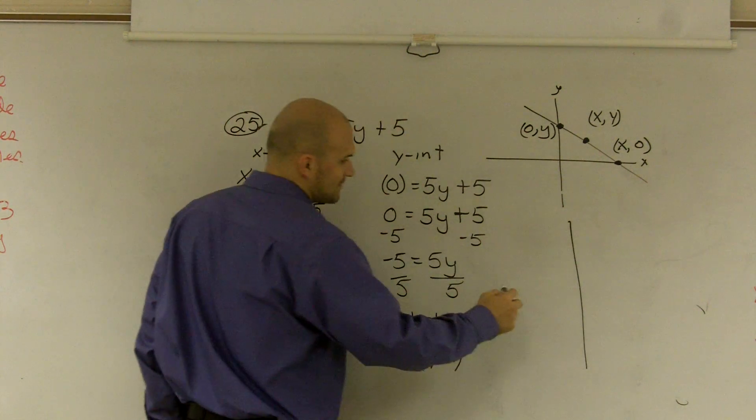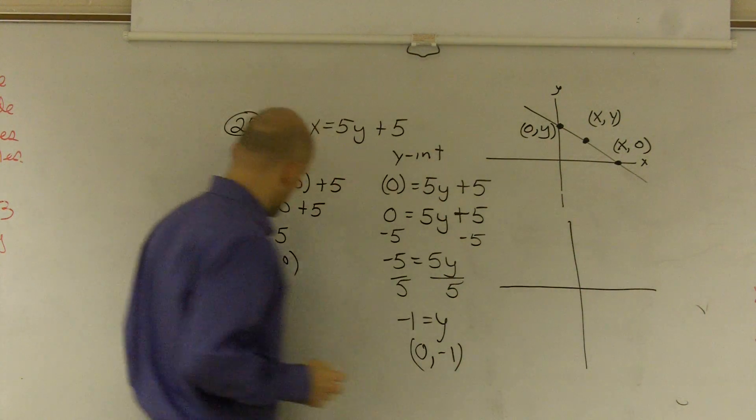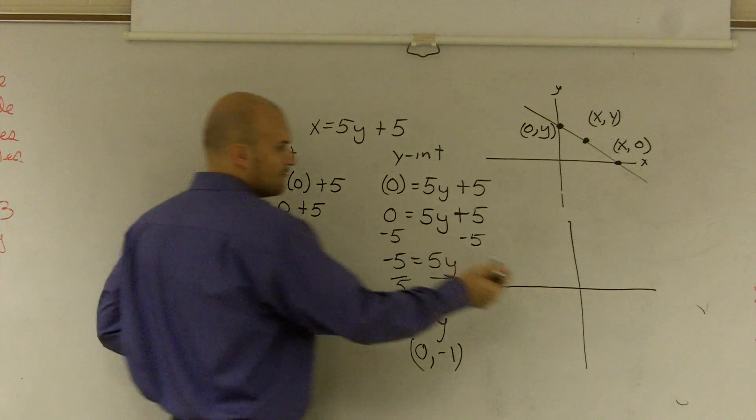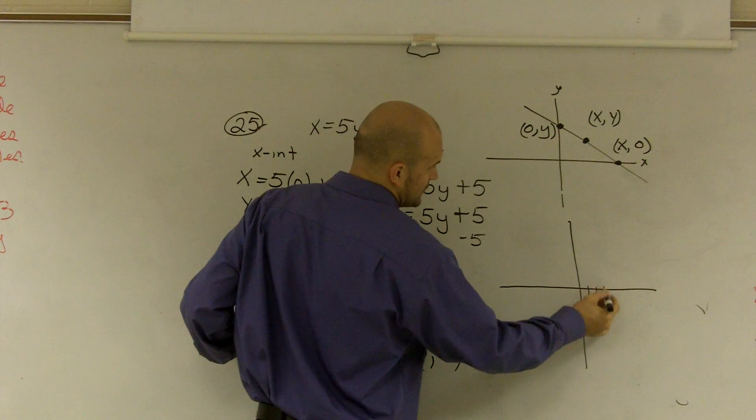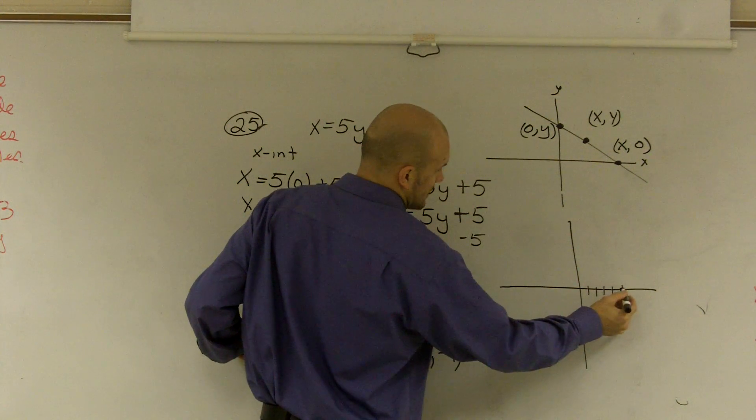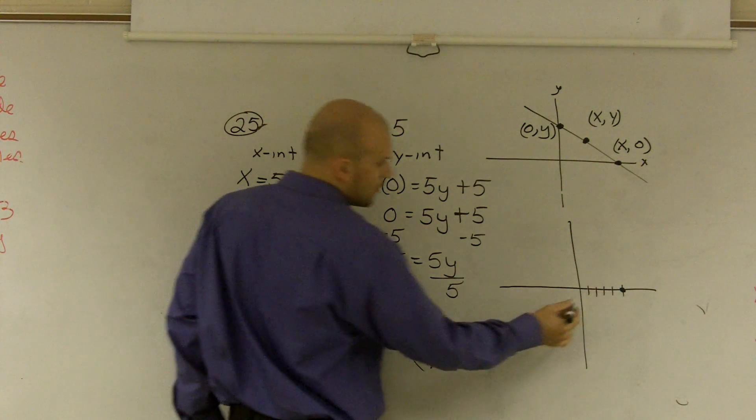Then what I do is I just graph the two points. So five, zero tells you to go five units to the right. One, two, three, four, five.